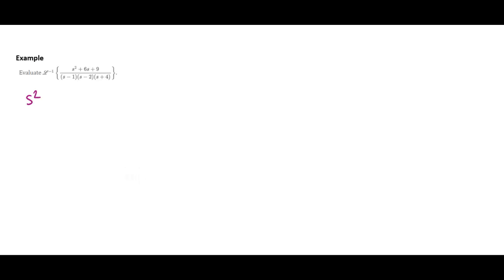So I'm going to do S squared plus 6S plus 9 all over S minus 1 times S minus 2 times S plus 4. And I'm trying to figure out the combination of a, b, and c such that I get this numerator when I combine this fraction here with these denominators.